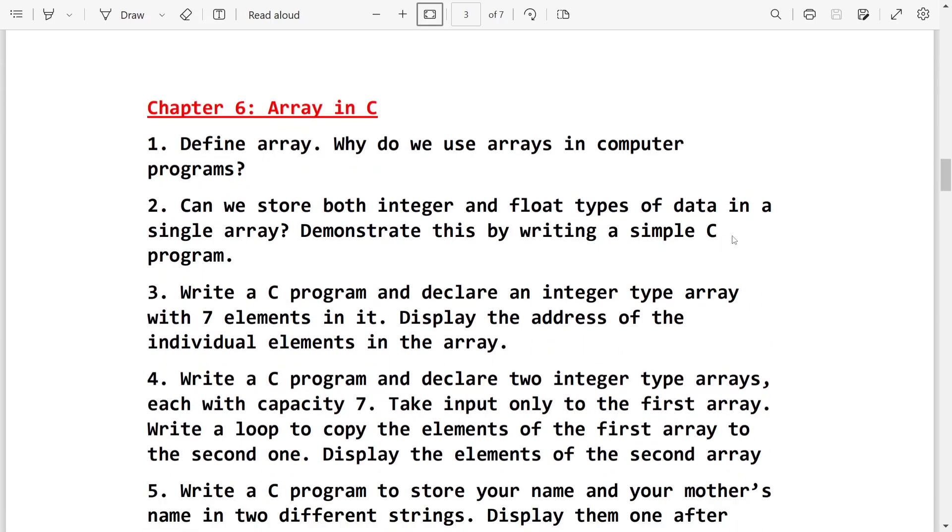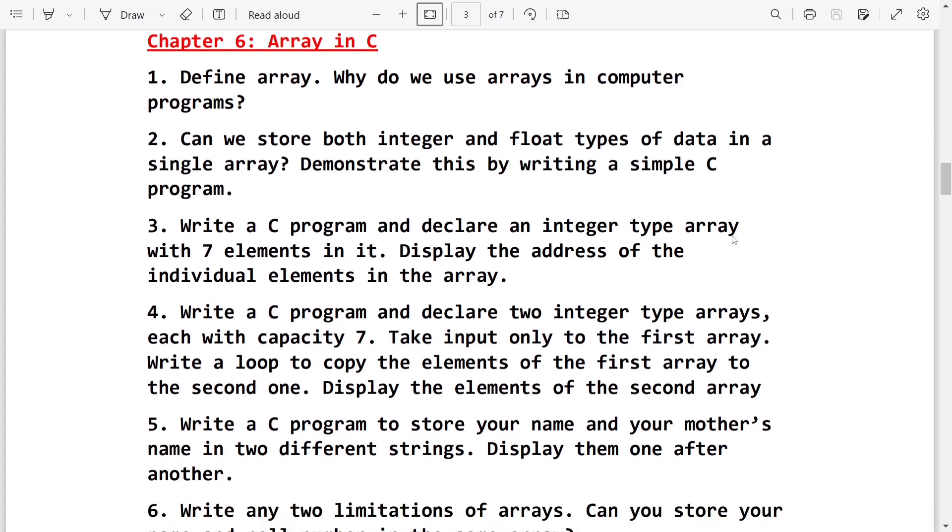After that will come next chapter 6, array in C. Here, define array, why do we use array in a C program, not computer program. Then can we store both integer and float types of data in single array, write a C program. This one you will see, it's important.